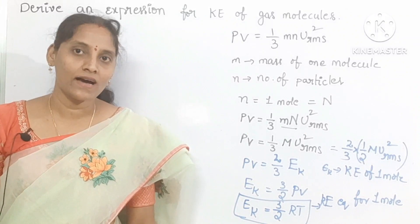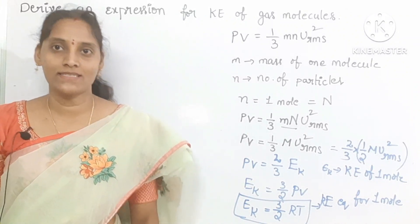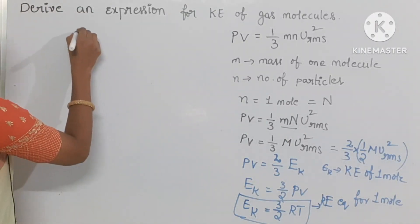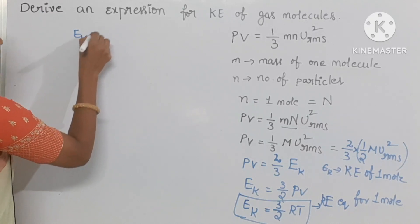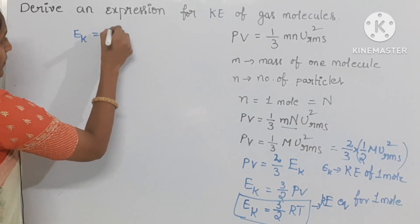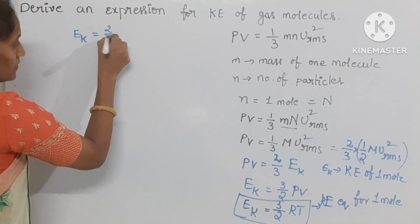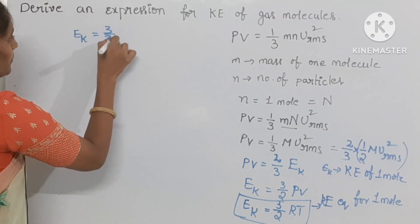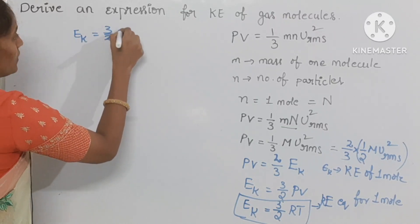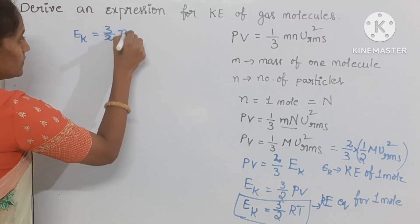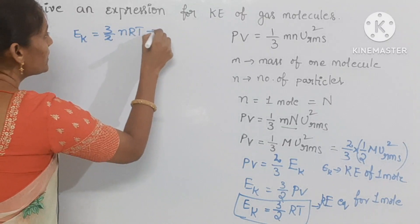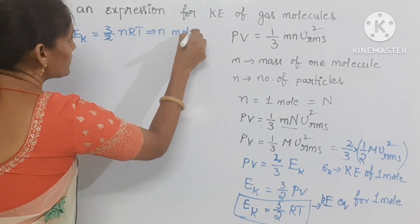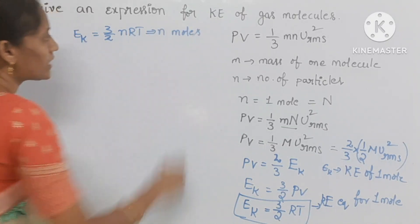If N moles are there, what is the equation? You can multiply with small n. So E_K equal to 3 by 2 nRT. This is for N moles of molecules.